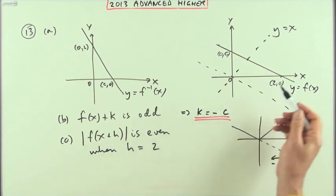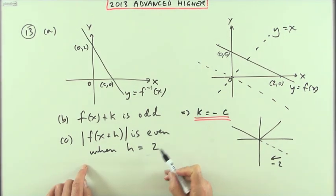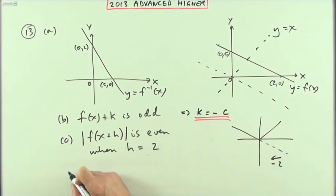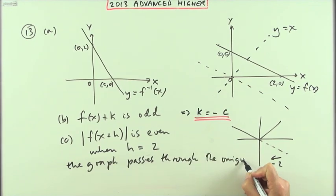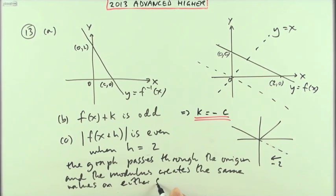The only other thing I could do to try and justify this being two marks as opposed to just one mark is to add that when h is 2 the graph passes through the origin and the modulus creates the same values on either side. Maybe these extra diagrams, these annotations here, may help a bit.